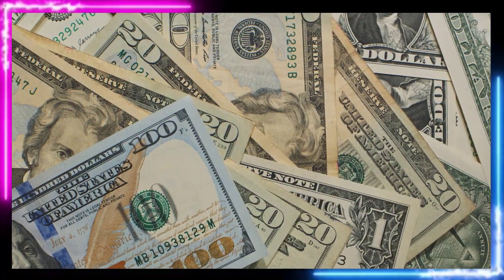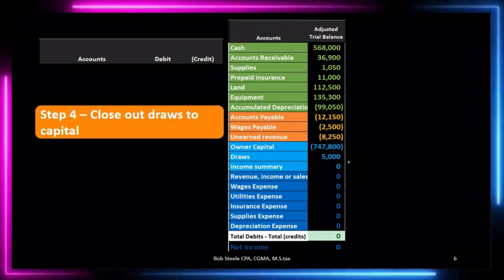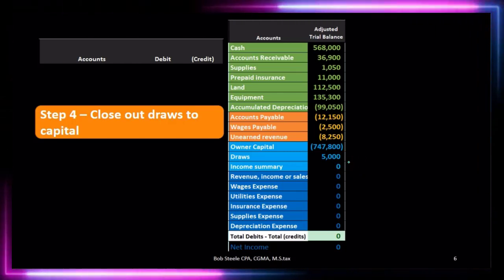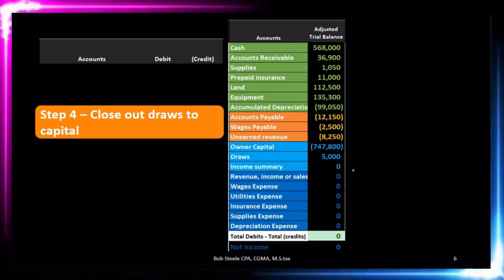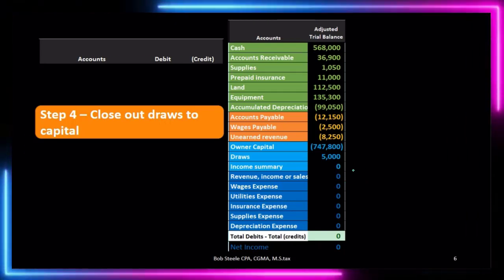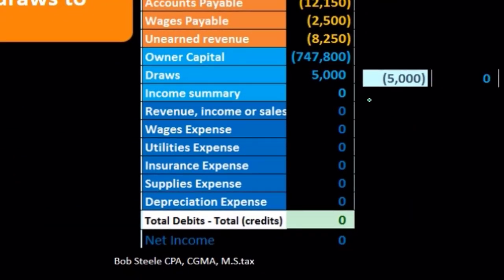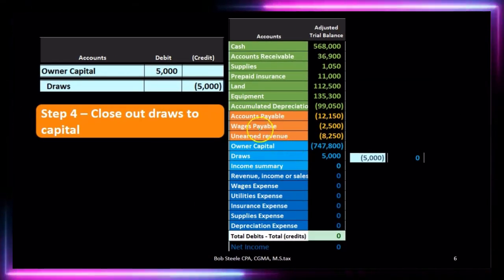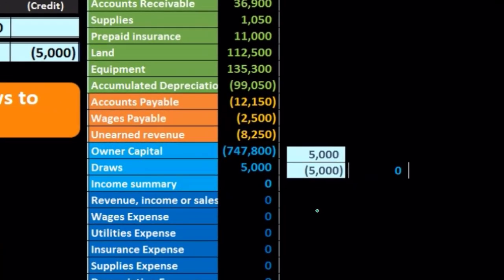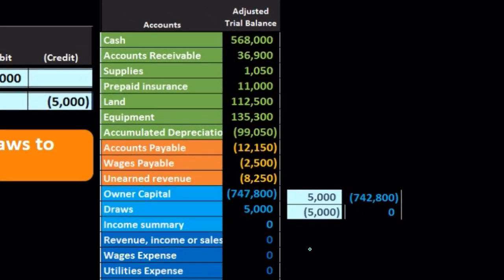Let's see what happens when we post this final entry to the closing process. We see there's a debit balance in the draws account. Having the trial balance really helps us see if an account has a debit or credit — without it we could easily go the wrong way. We want to do the opposite thing to make it zero, so we're going to credit it. The other account goes to capital — we're closing it out to the capital account, so the debit goes to capital. If we post that debit, we have the $747,800 credit in capital, and debiting it will make it go down to $742,800.